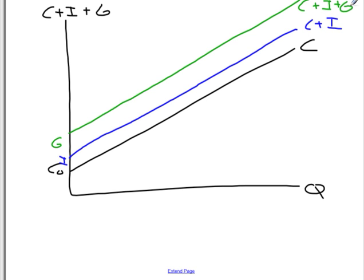Consumption plus some constant level of investment on top of that plus some constant level of government spending on top of that, and once again, the 45 degree line. Now, this point gets more interesting.